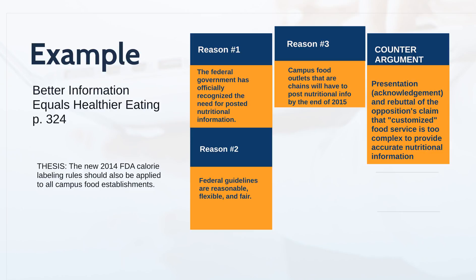The first reason in the first body paragraph is that the federal government has officially recognized the need for posted nutritional information — if it's good enough for the federal government, maybe that's something we should consider. Reason two is that the federal guidelines are reasonable, flexible, and fair. This is a smart guideline as a deterrent to people consuming too many calories.